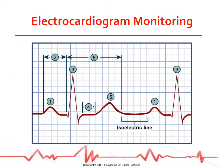The P wave represents the time for the passage of electrical impulses through the atrium, causing atrial depolarization — that's contraction. The PR interval is measured from the beginning of the P wave to the beginning of the QRS complex. It represents the time taken for the impulse to spread through the atria, AV node, bundle of His, the bundle branches, and the Purkinje fibers to the point immediately preceding ventricular contraction.